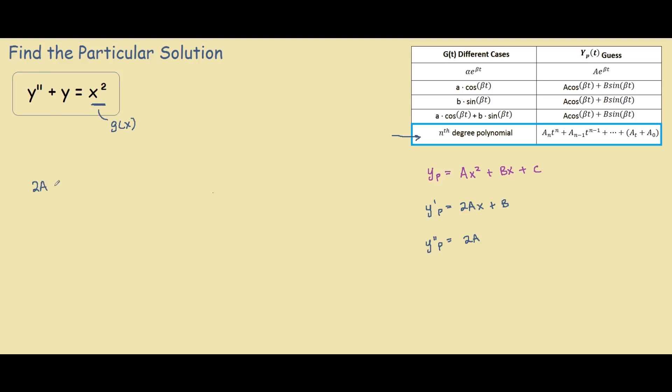We get 2a from plugging y double prime plus y which is ax squared plus bx plus c, and this equals x squared.